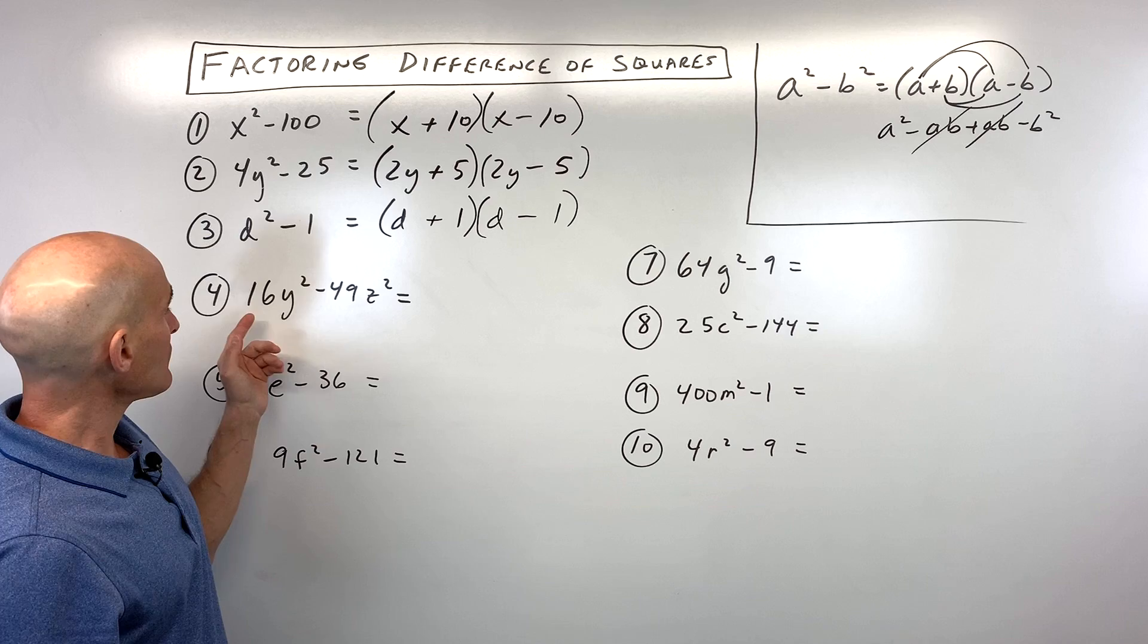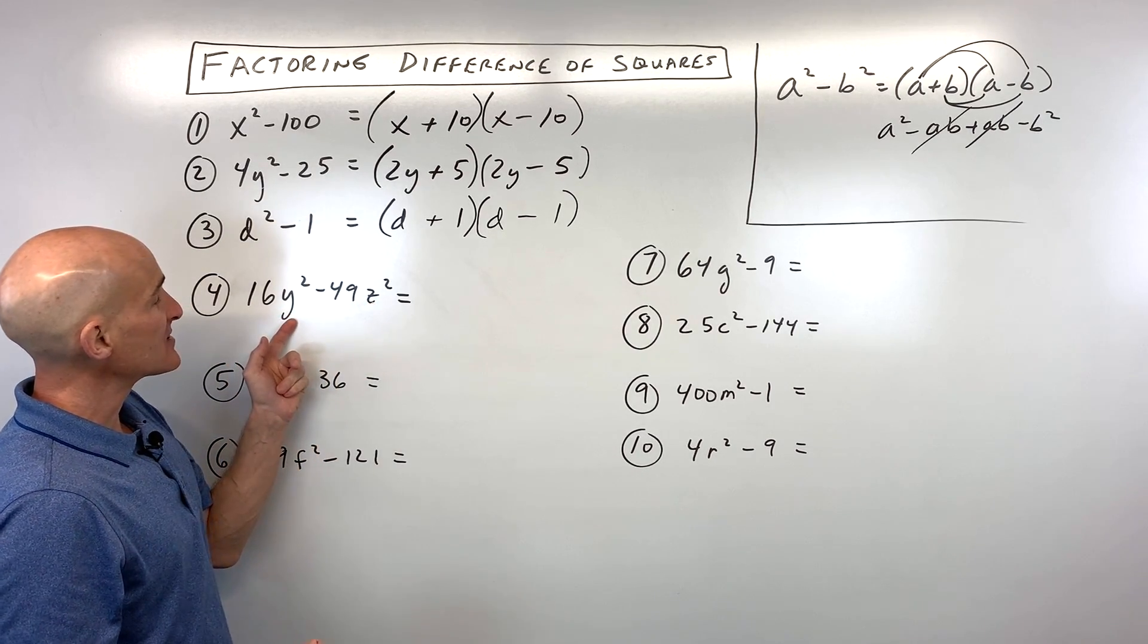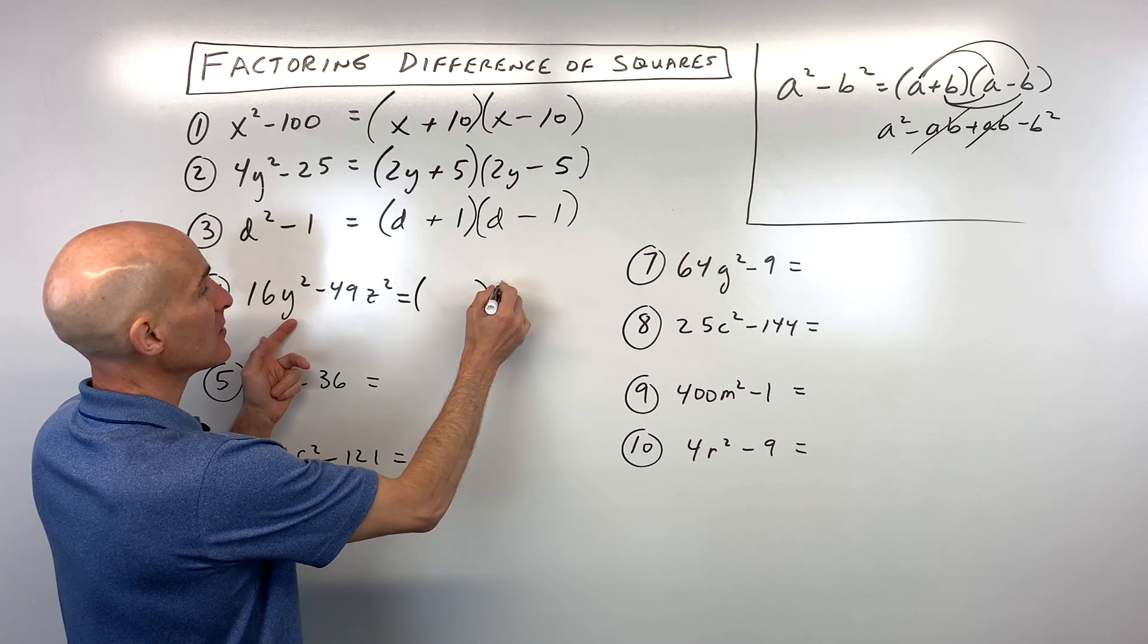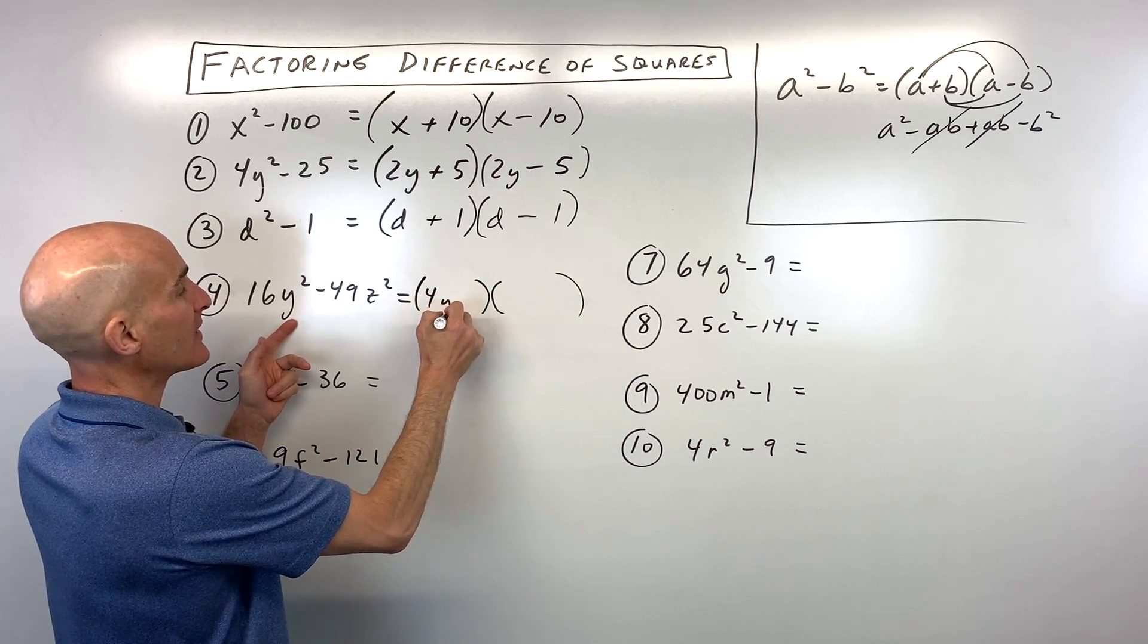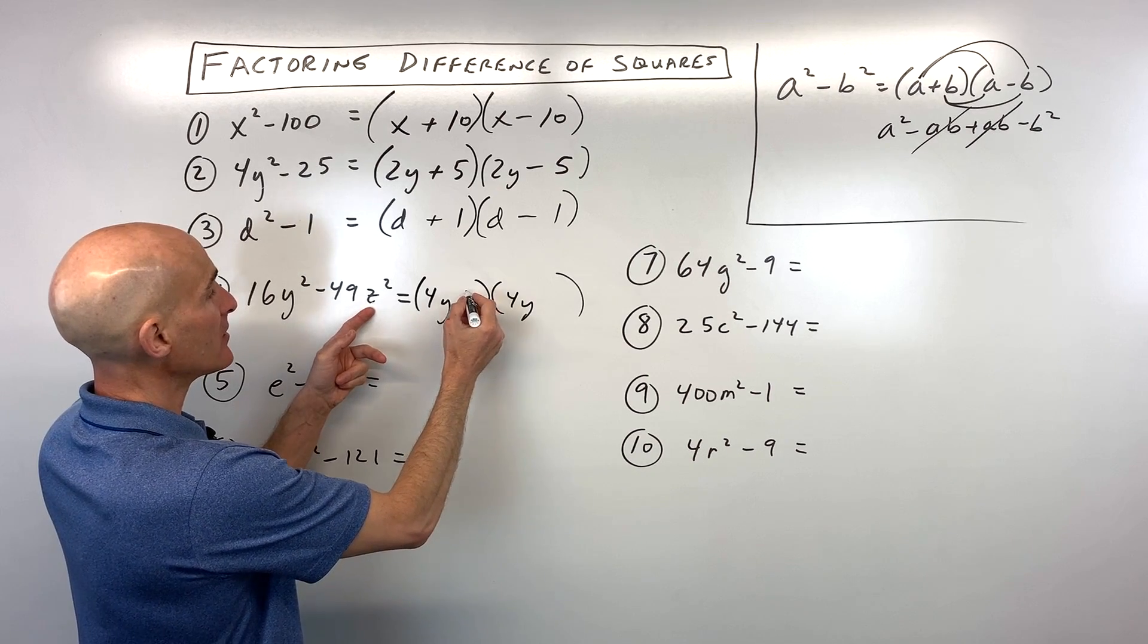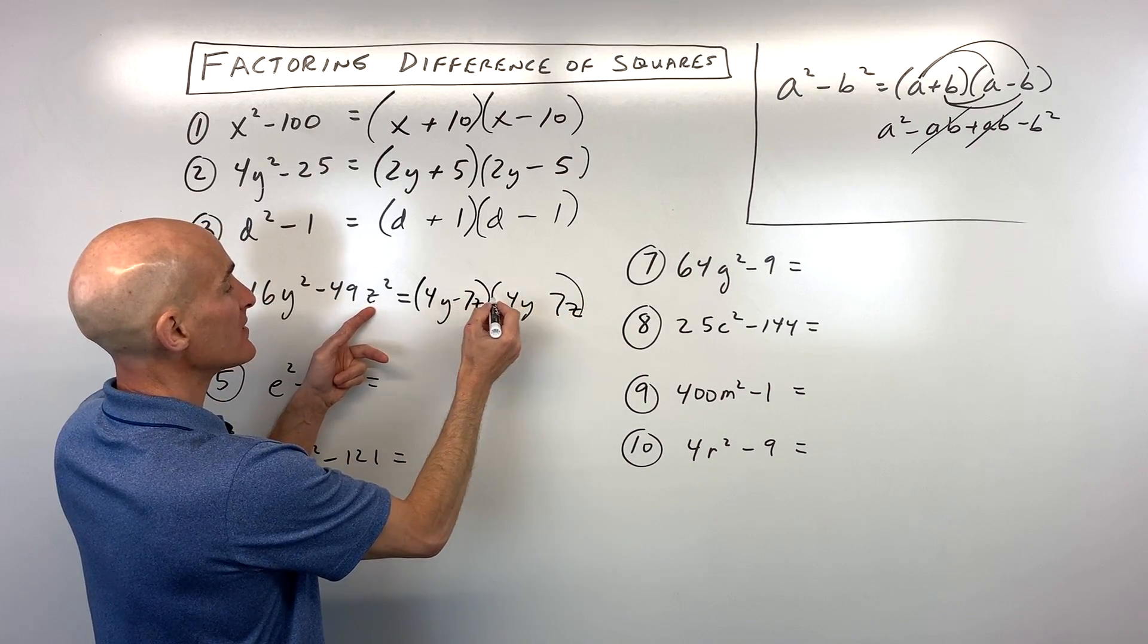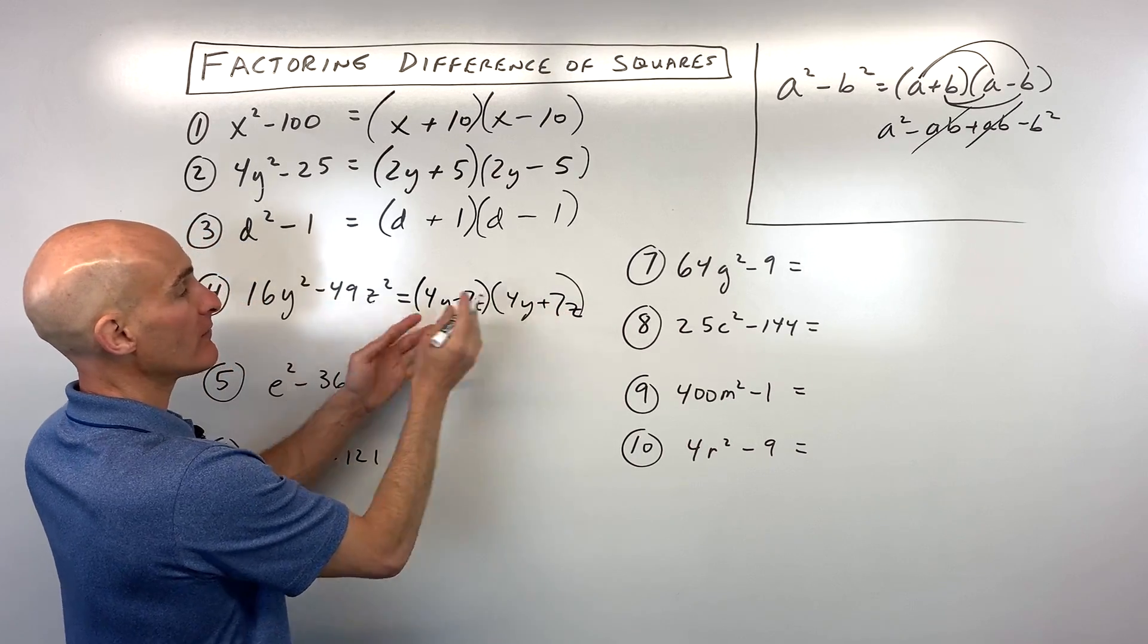For number four, this one's a little bit more challenging because we have some more variables in here. What times itself is 16y squared? That's going to be 4y times 4y. What times itself is 49z squared? That's going to be 7z and 7z. We just make one of these subtracting, one adding, or vice versa.